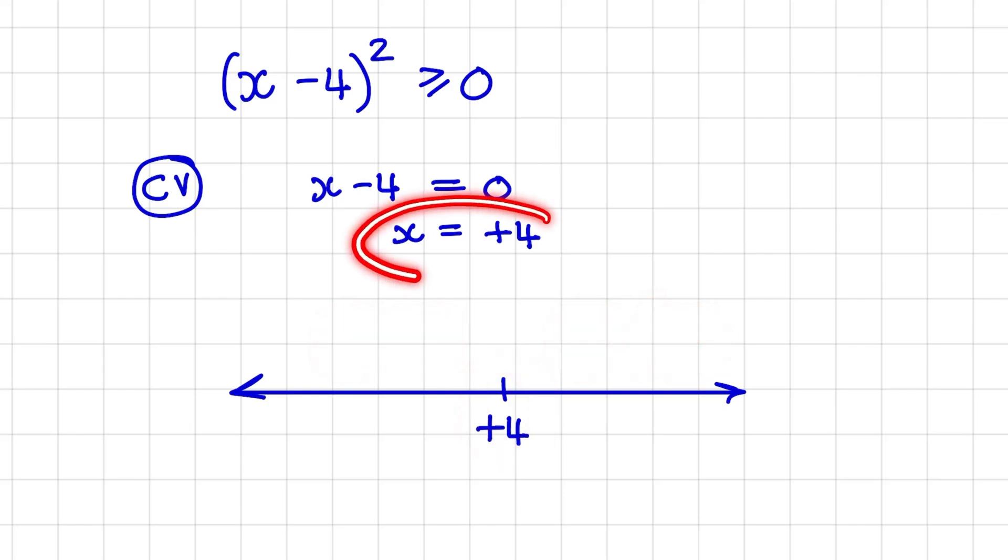But because we only have one value, we would test values on both sides of plus 4. And what we can do is replace x with a number to the right of 4. And let's use 5 for example. So we have 5 minus 4 squared, and that is equal to positive 1.